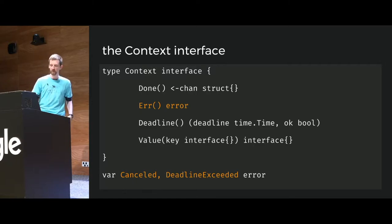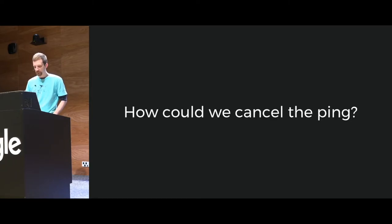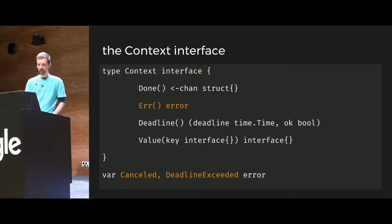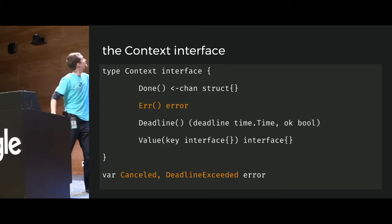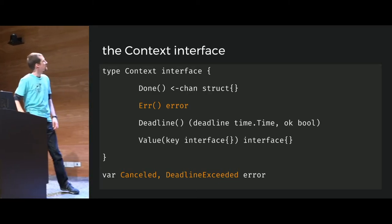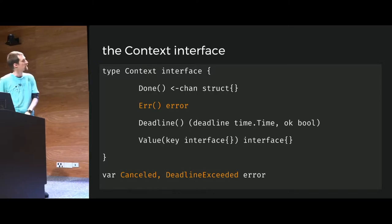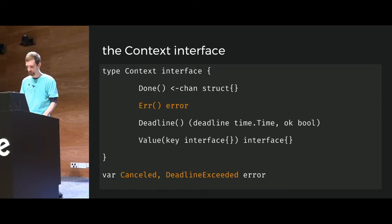It also has an Err method — in case timeouts and things like that happen — to get the actual error. The errors you can receive from context include things like DeadlineExceeded and Canceled.